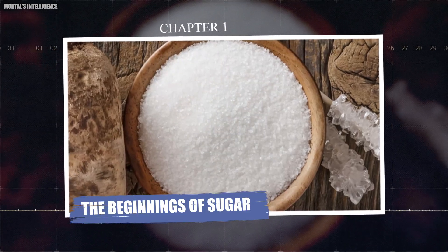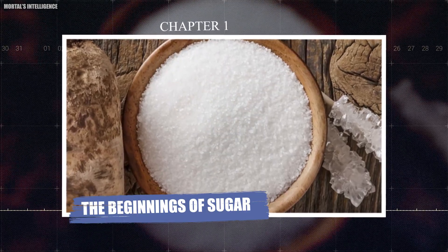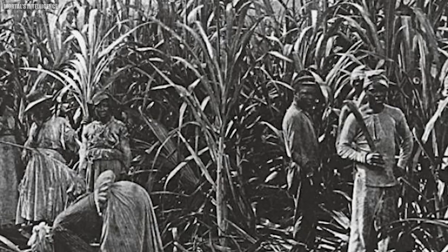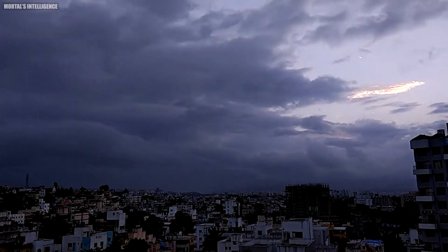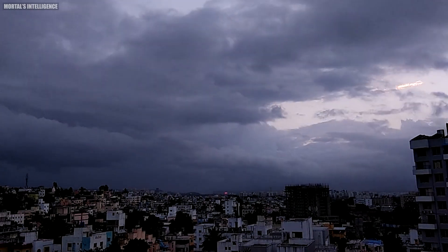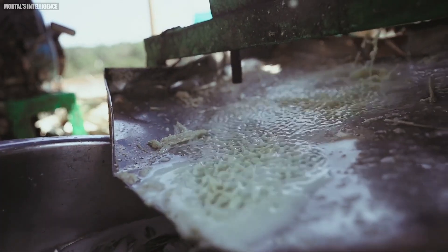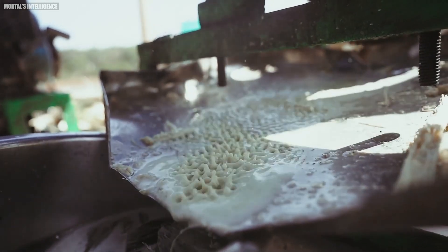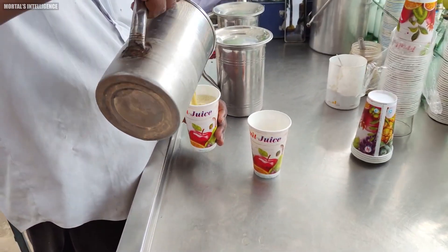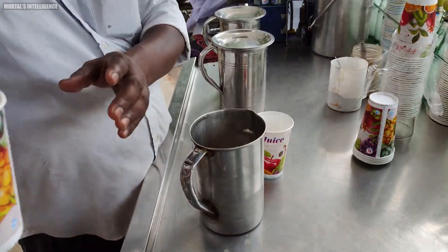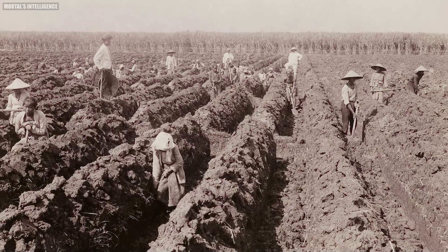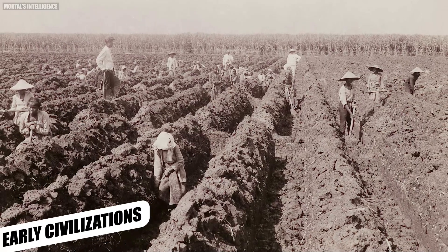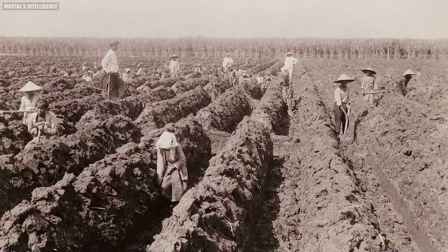Chapter 1: The Beginnings of Sugar. The story of sugar begins in ancient times, with its origins tracing back to regions like India, China, and New Guinea. It was here that people first discovered the sweet juice of sugarcane and began to cultivate it, recognizing its potential as a source of energy and a natural sweetener. These early civilizations started to harness the power of sugarcane.